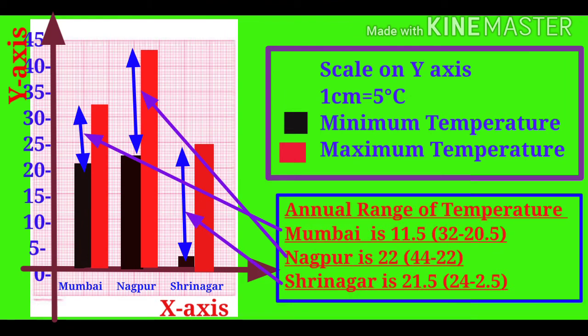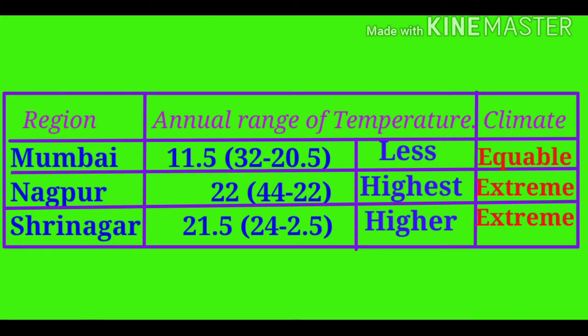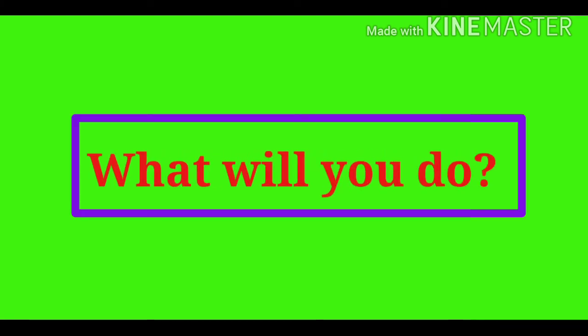So, we can conclude that the annual range of temperature of Mumbai is 11.5, Nagpur is 22, and Srinagar is 21.5. Our observations show us that the climate of Mumbai is equable as the range of temperature is less, and the climate of Nagpur and Srinagar is extreme as the range of temperature is very high.